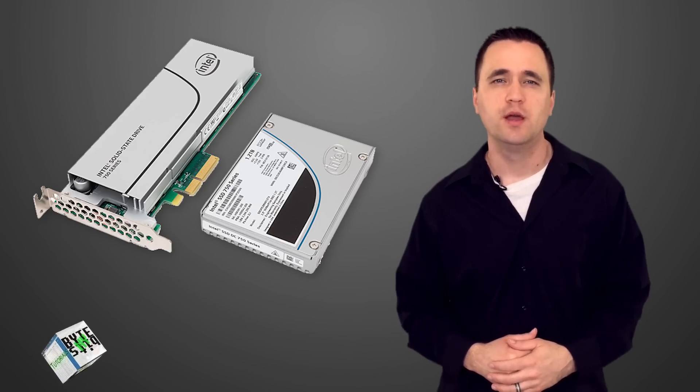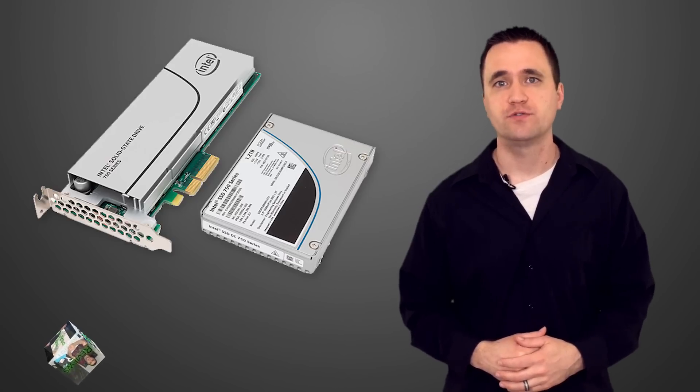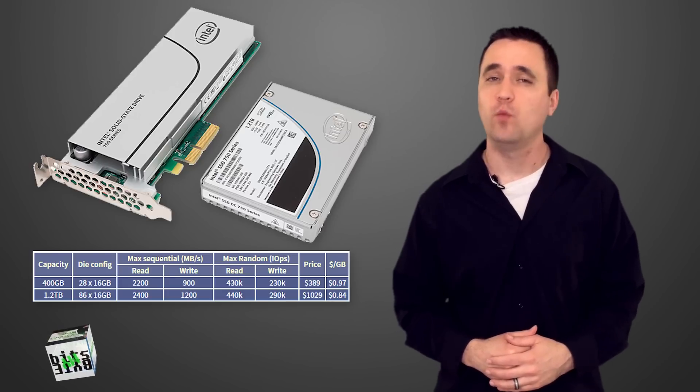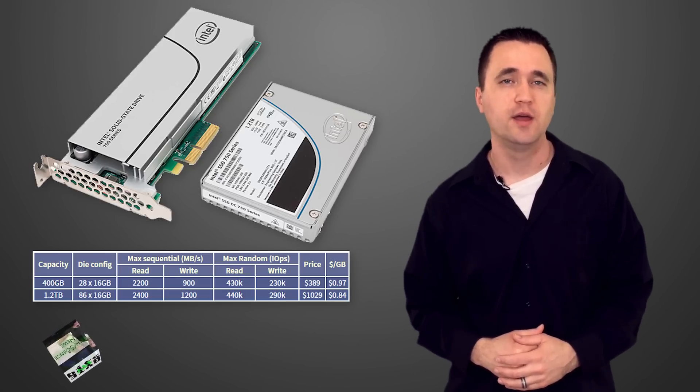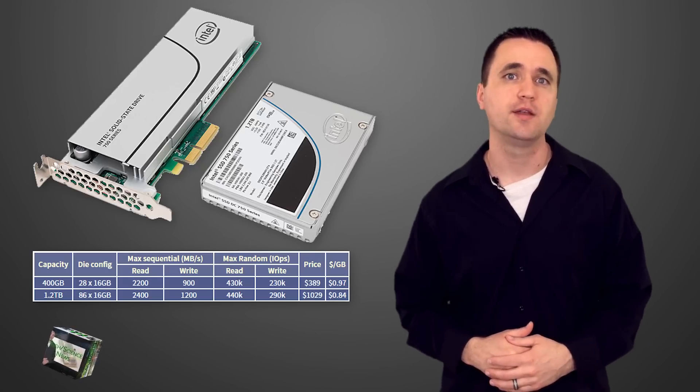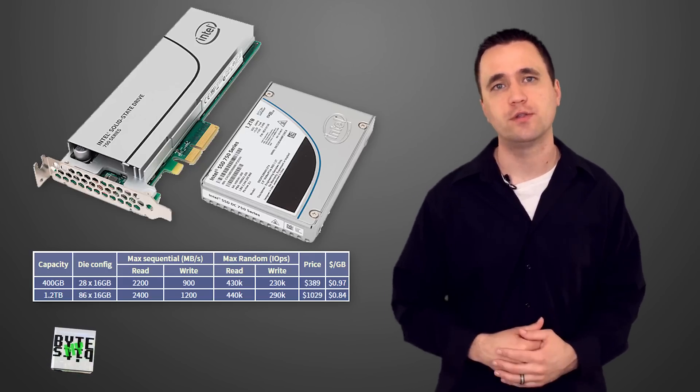Intel launched a new lineup of SSDs that set a new standard for speed. The 750 series that comes in a PCI Express or 2.5 inch flavors offers speeds of 2.4GBps read and 1.2GBps write. They're offering a 400GB drive that is slightly slower at $389, while the flagship 1.2TB version is just a little over $1,000.